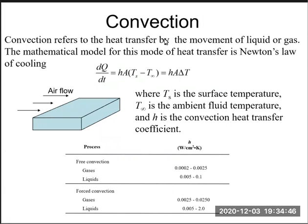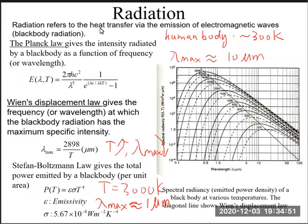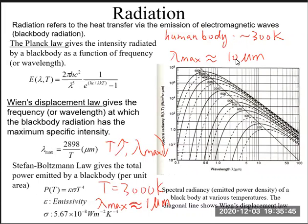Convection refers to heat transfer by the movement of liquid or gas. The third mode, radiation, refers to heat transfer by the emission of electromagnetic waves — also called black body radiation. We have Wien's displacement law, which gives the wavelength at which black body radiation has maximum specific intensity: lambda_max equals 2898 divided by temperature in Kelvin. For the human body, lambda_max is about 10 micrometers, which is infrared radiation — so the human body emits infrared.